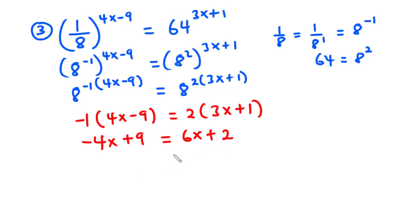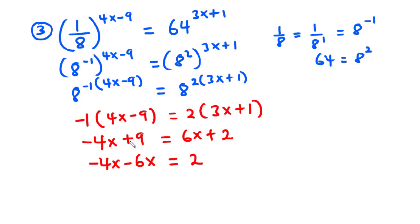Now let's transpose 6x to the left hand side. So we have negative 4x minus 6x equals 2, and then we have negative 9. So we have negative 10x equals